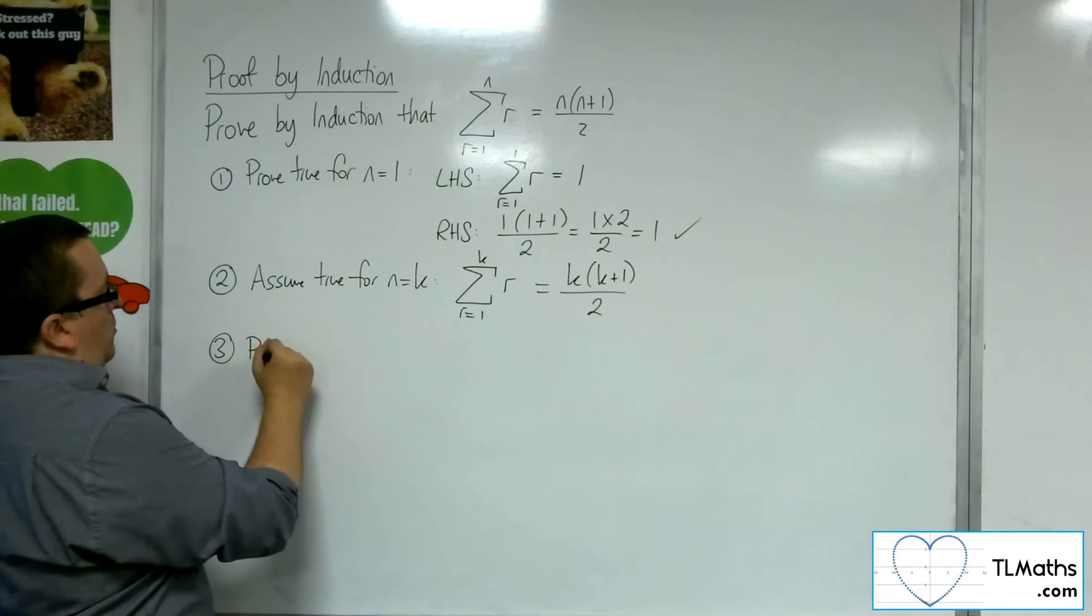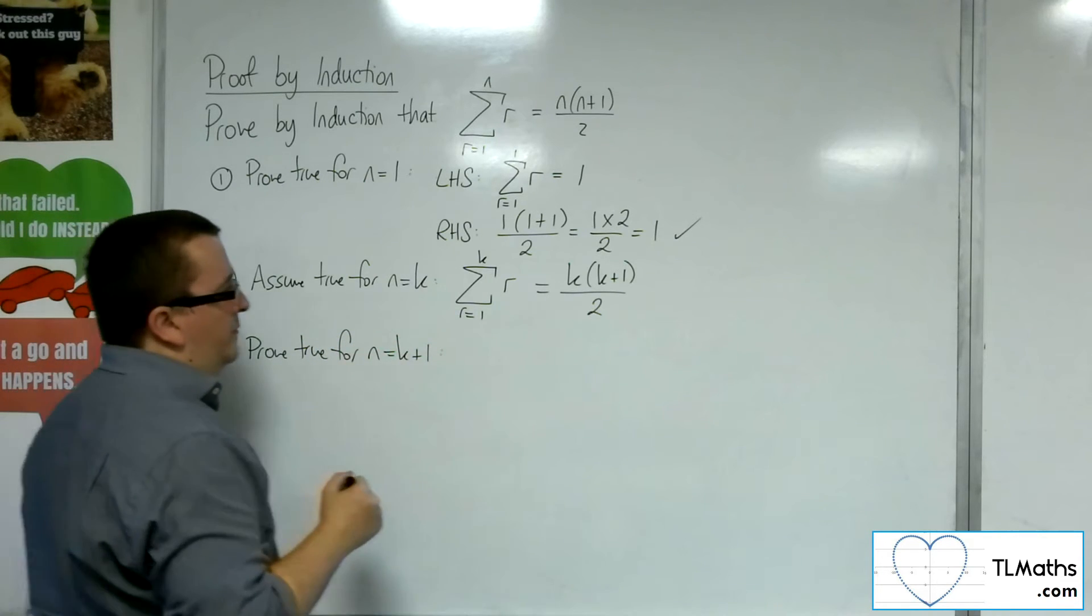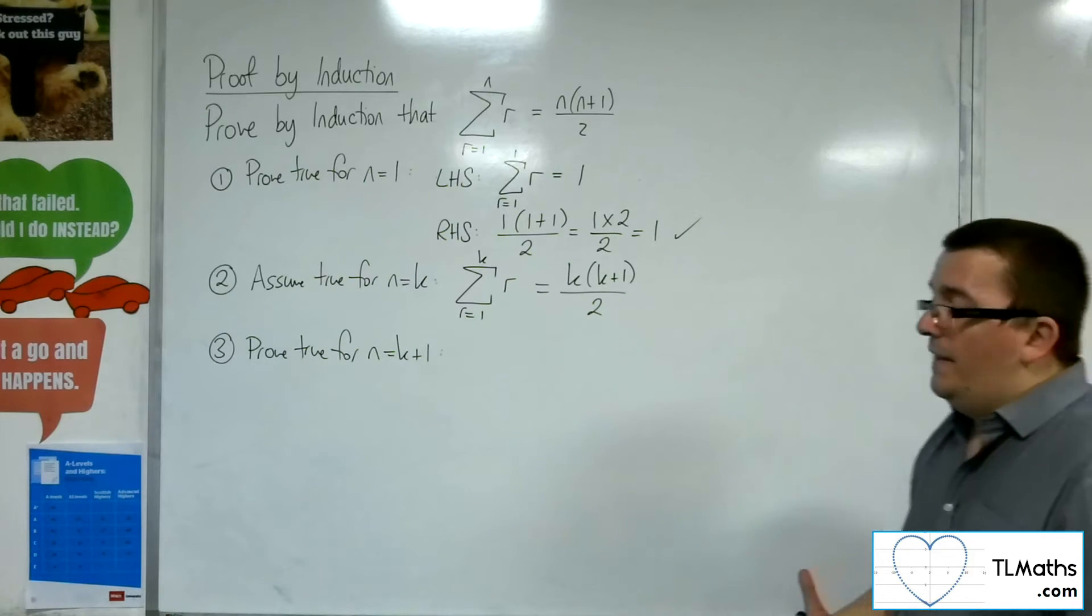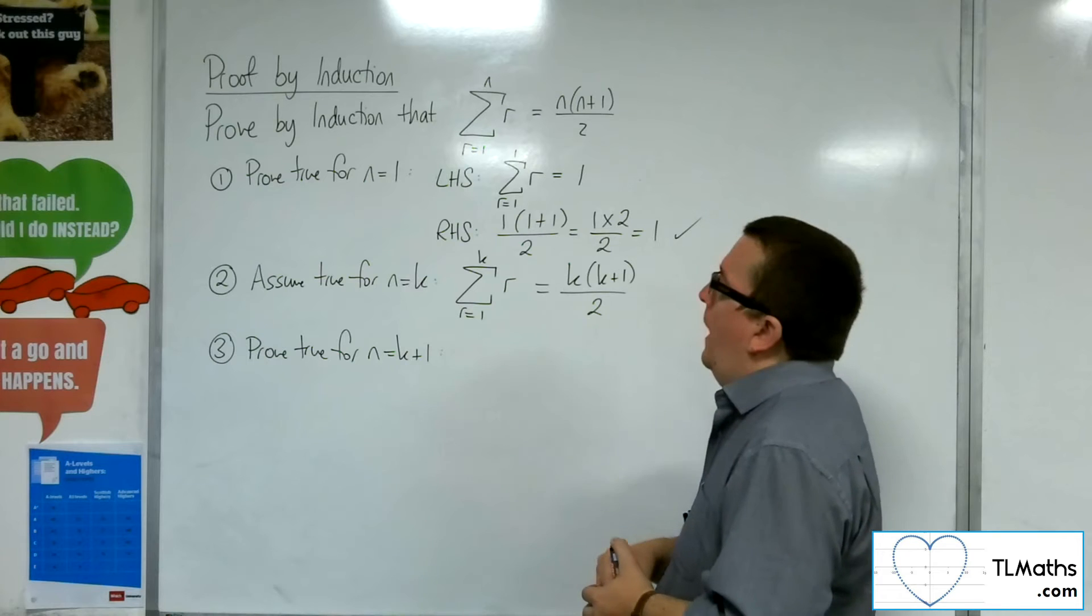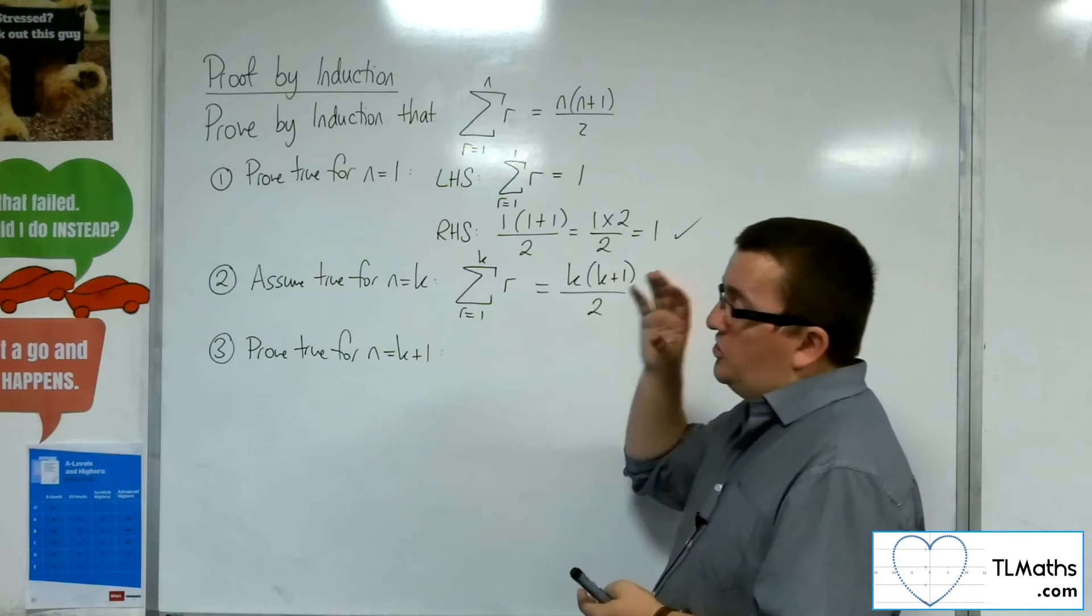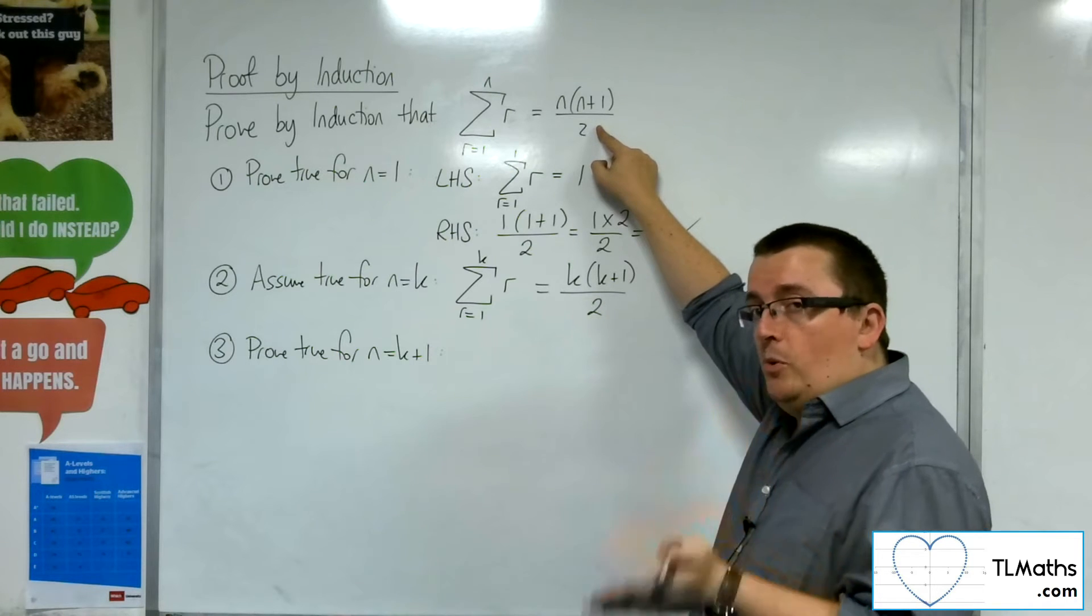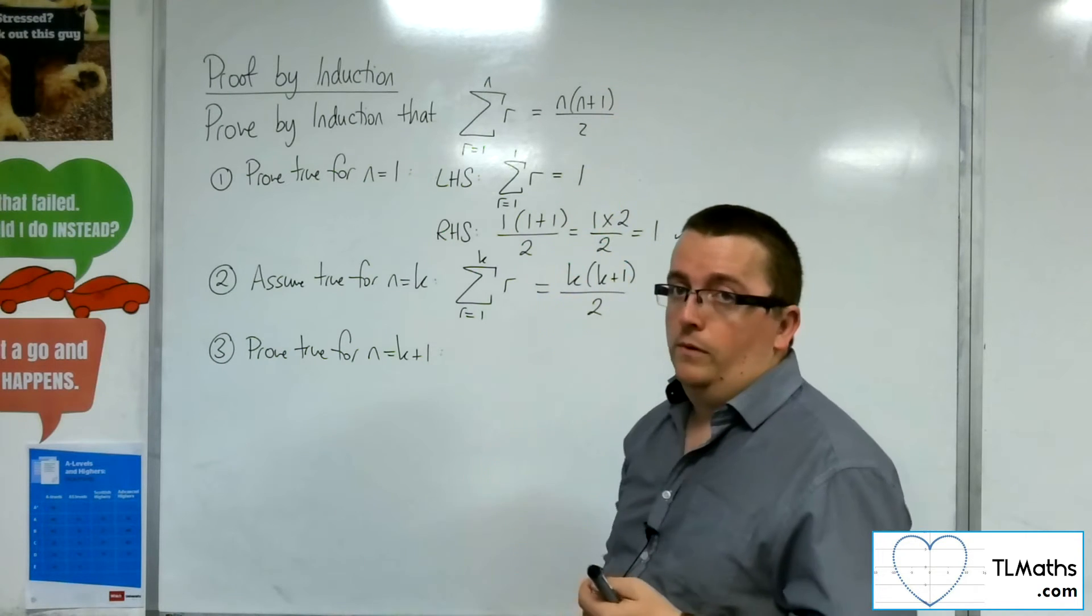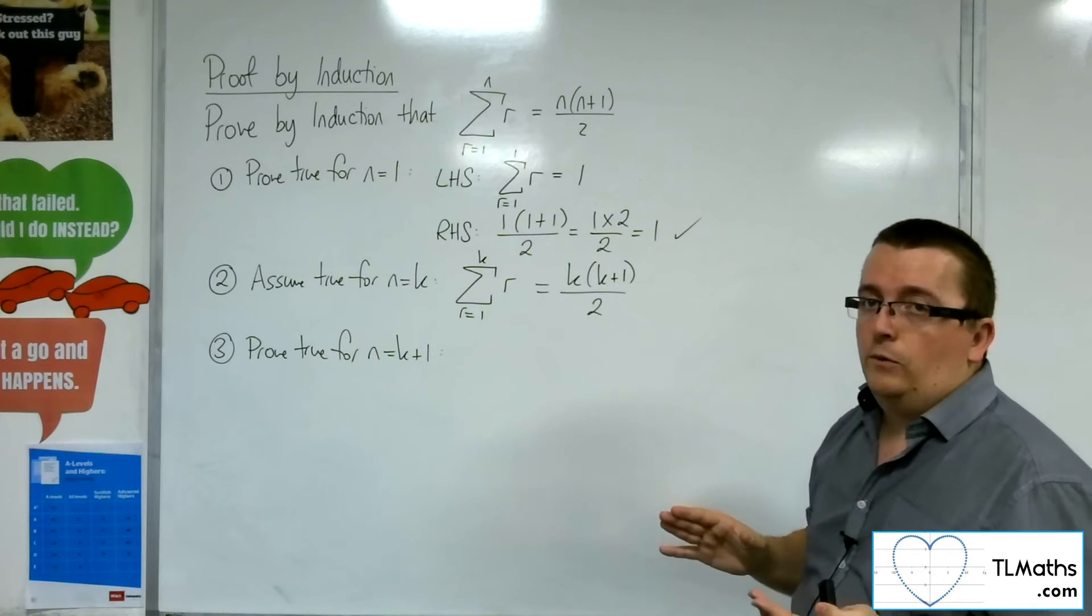Step 3. Prove true for n equals k plus 1. So what we need to do here, the end goal is to arrive at an expression on the right hand side so that it is the same as me just substituting n in this formula with k plus 1. So what I want to arrive at is k plus 1 times k plus 2 over 2. That is the end result because that is showing me that it works for n equals k plus 1.